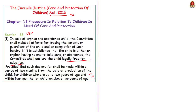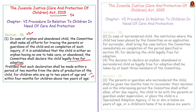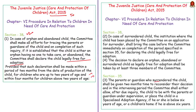Note that the time period is counted from the date of production of the child. In the case of a surrendered child, the parent or guardian who surrendered the child shall be given two months to reconsider their decision. In that time, the committee, after due inquiry, shall either allow the child to be with their parents or guardians under supervision, or place the child in a specialized adoption agency if below six years of age, or in a children's home if above six years of age.